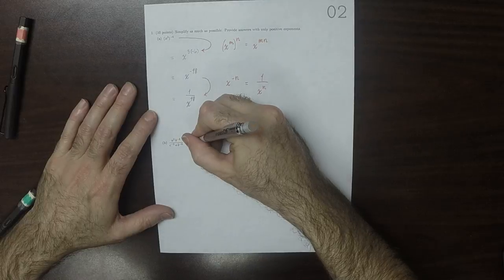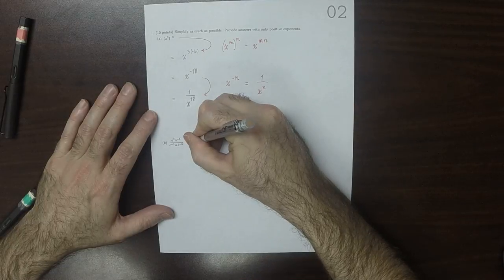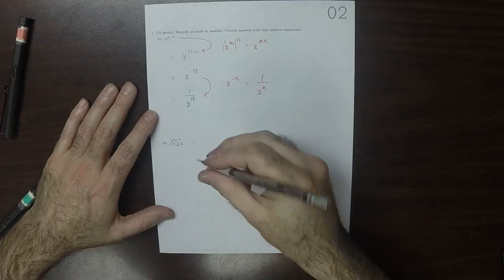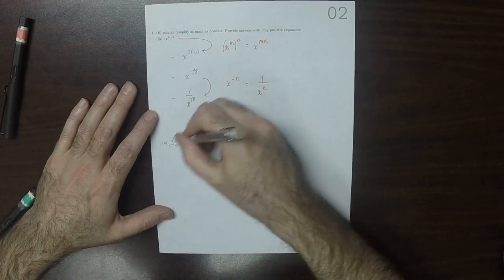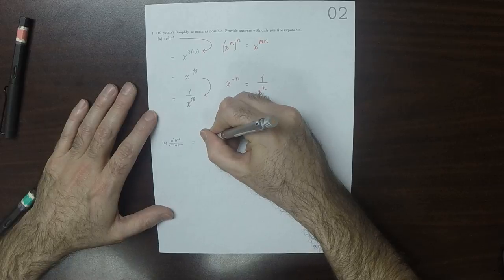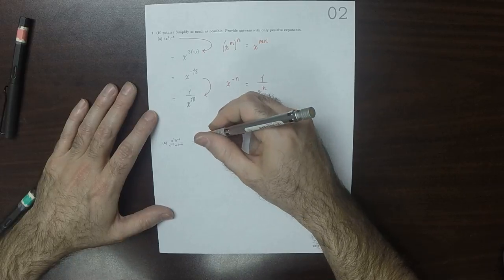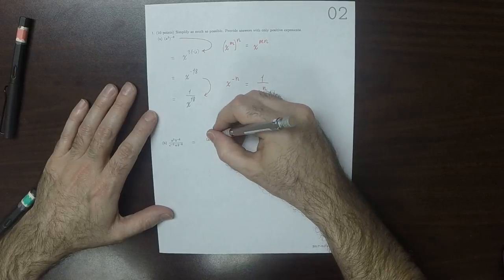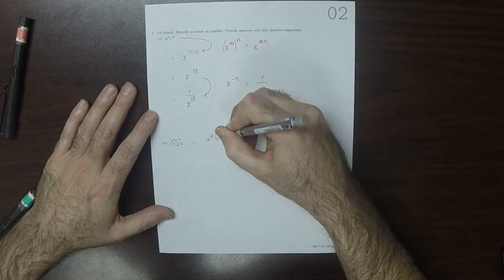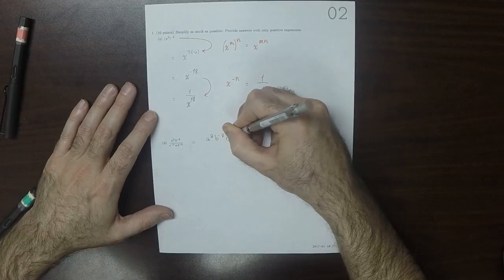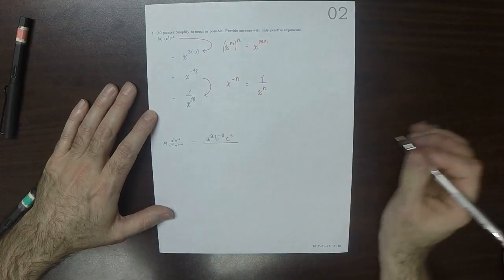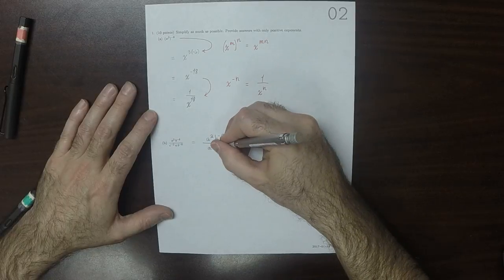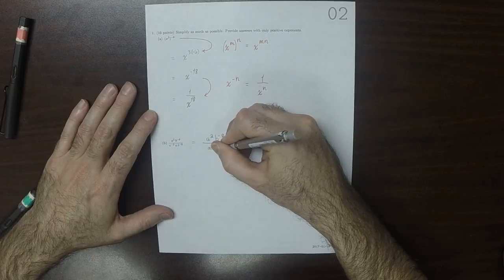On the next one, first let's get all the factors where they have positive exponents. So I'll move the c's up, so this would be a squared b to negative 8, c to positive 3, and then divide by a b to negative 6.